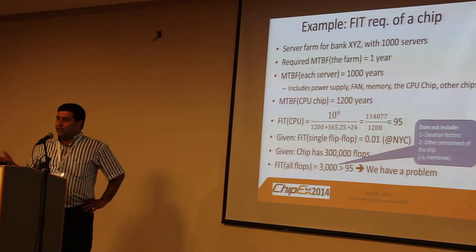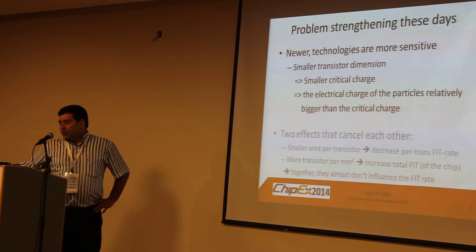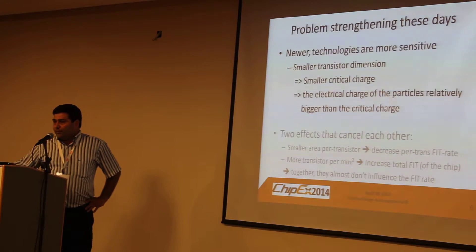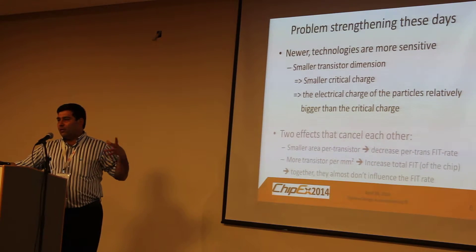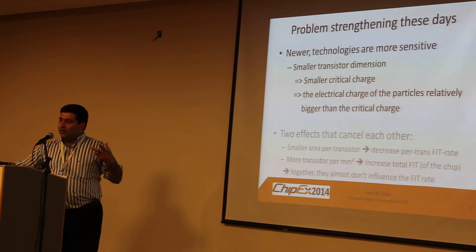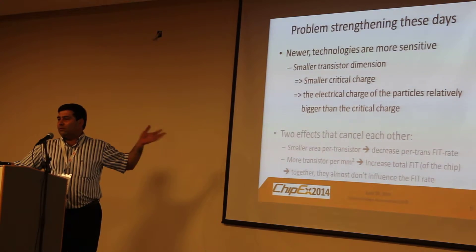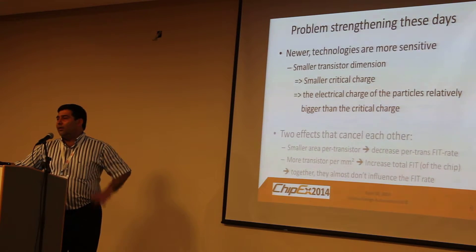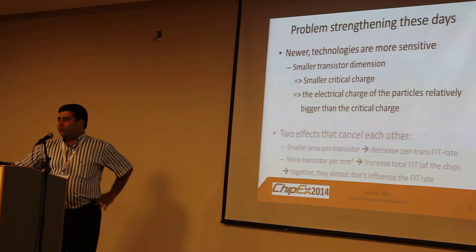What's happening now is that this problem — soft errors — is becoming harder and harder because we are reducing the size of the transistors. The charge inside each transistor is becoming smaller, so it's easier for neutrons, alpha particles, and protons to cause a flip. The smaller the technology, the harder it is to deal with, and there are more soft errors than before.